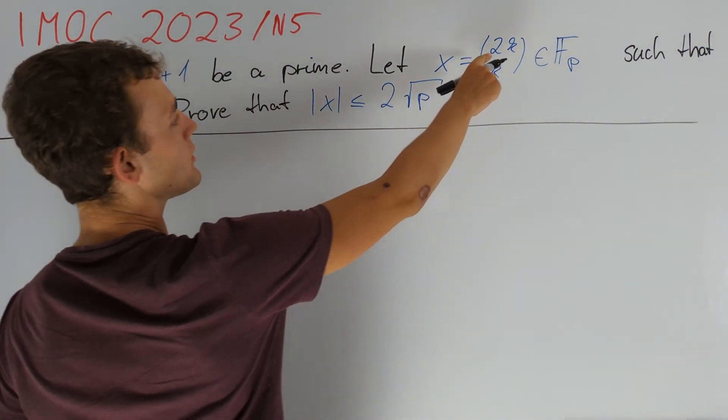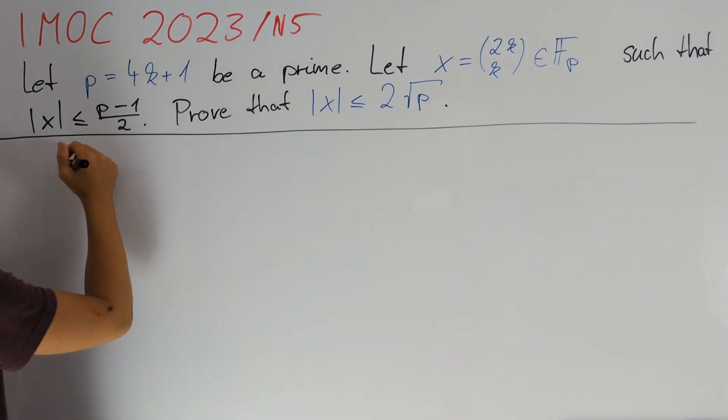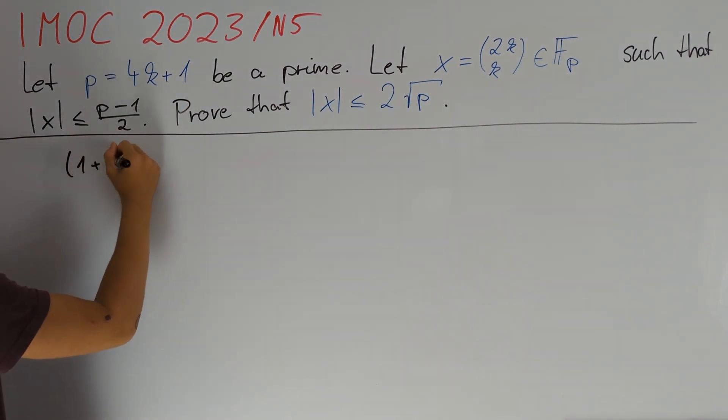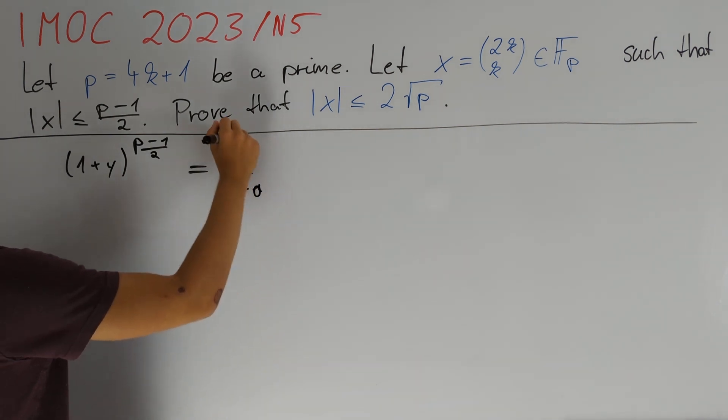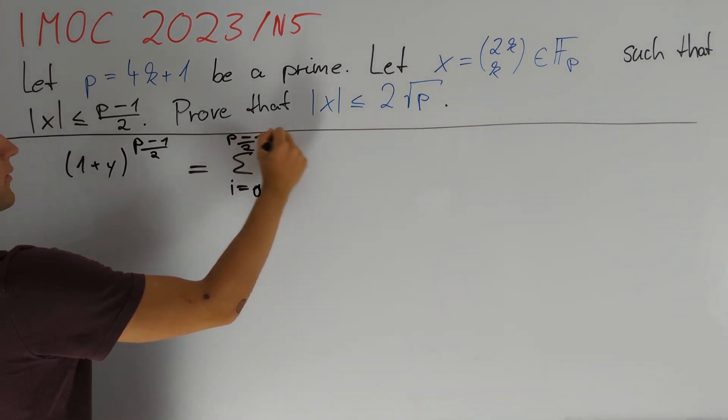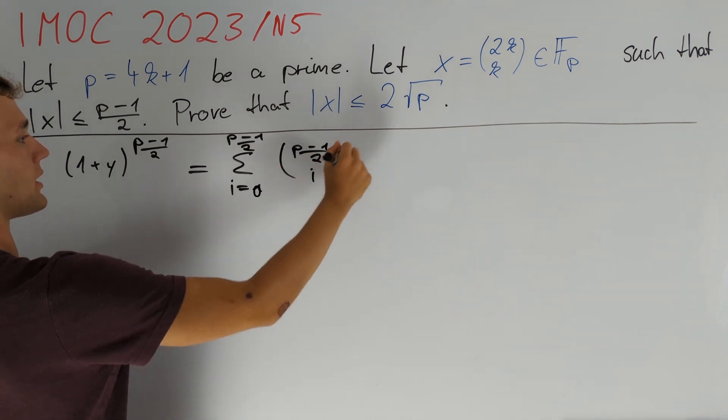Since we have a 2k here which is equal to (p-1)/2, we consider (1+y) to the power of (p-1)/2 which is nothing but the sum of i going from 0 to (p-1)/2 of ((p-1)/2 choose i) times y to the power of i.